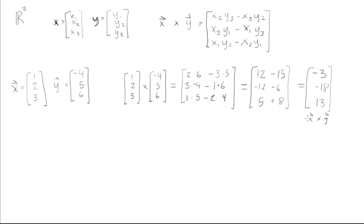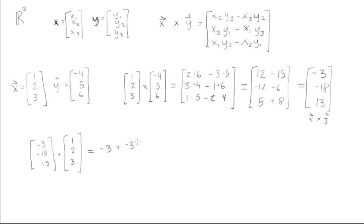Now I mentioned that x cross y is orthogonal to both original vectors. Let's test that. We'll take the dot product of (-3, -18, 13) with vector x = (1, 2, 3): (-3)(1) + (-18)(2) + (13)(3) = -3 - 36 + 39 = 0. So yes, these two vectors are orthogonal.